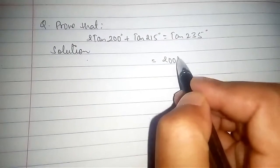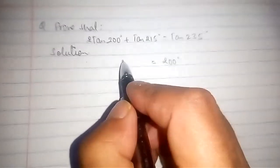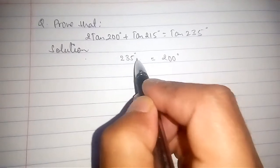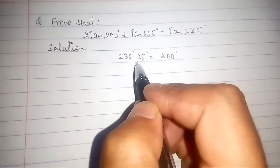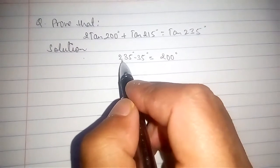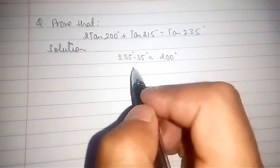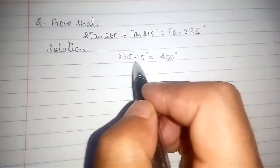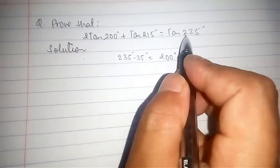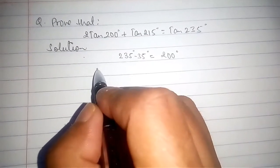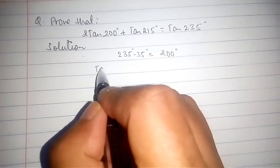We insert two angles such that their difference should be 200°, and at least one angle taken should be from the given question. So 235° is one angle. After this, see the equation — all terms consist of the tan ratio, so we will multiply both sides by the tan ratio.